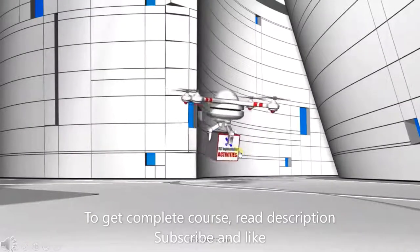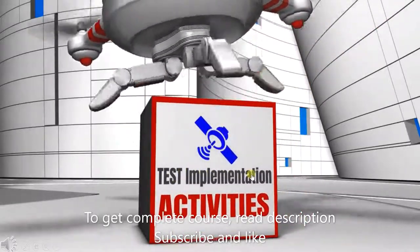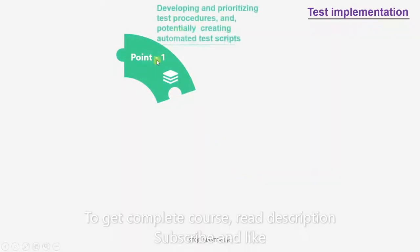Hello, today we will be discussing activities under test implementation. Let's get started. The first activity is developing and prioritizing test procedures and potentially creating automated test scripts.